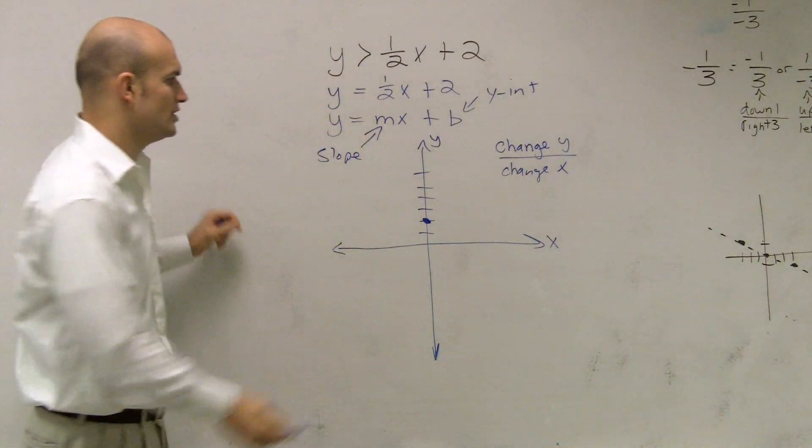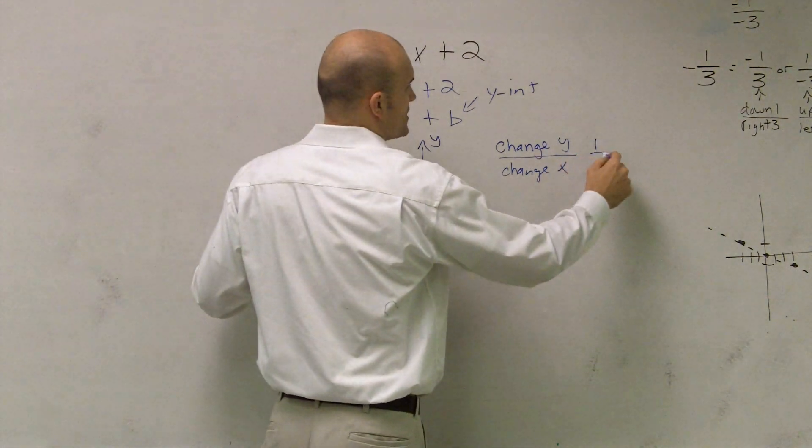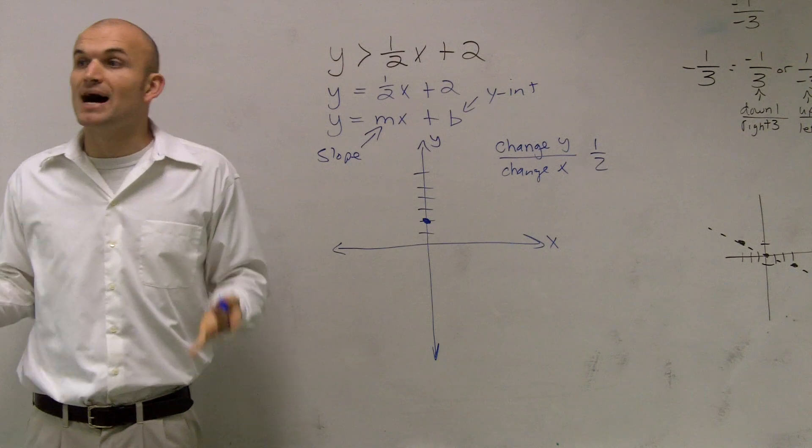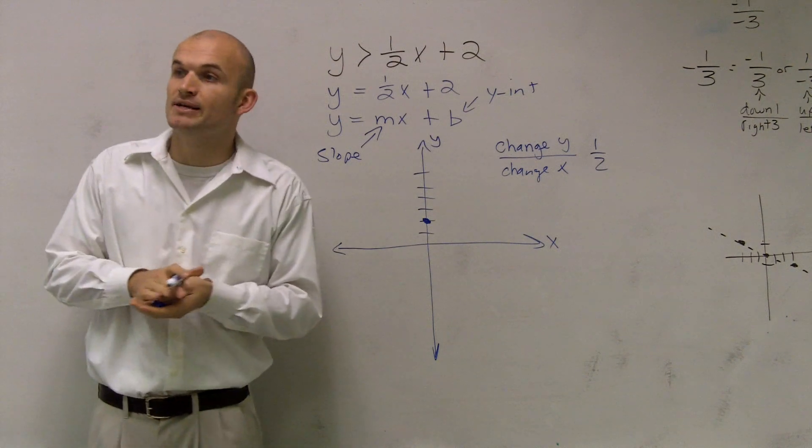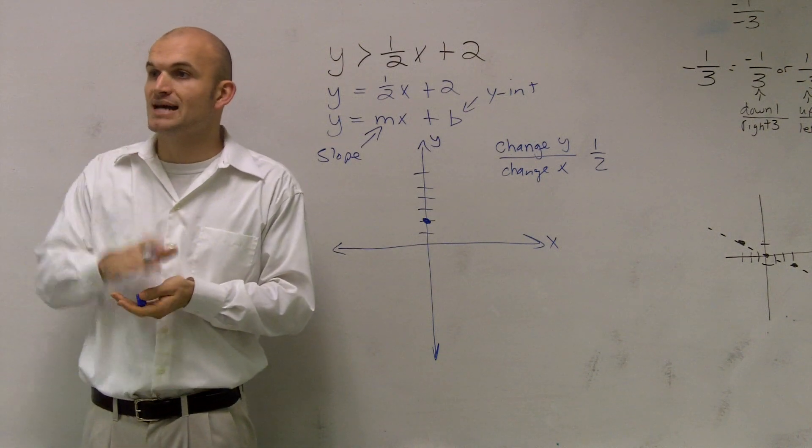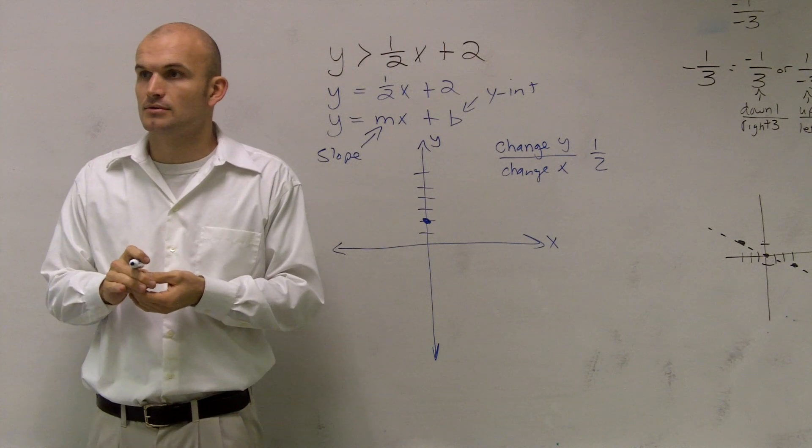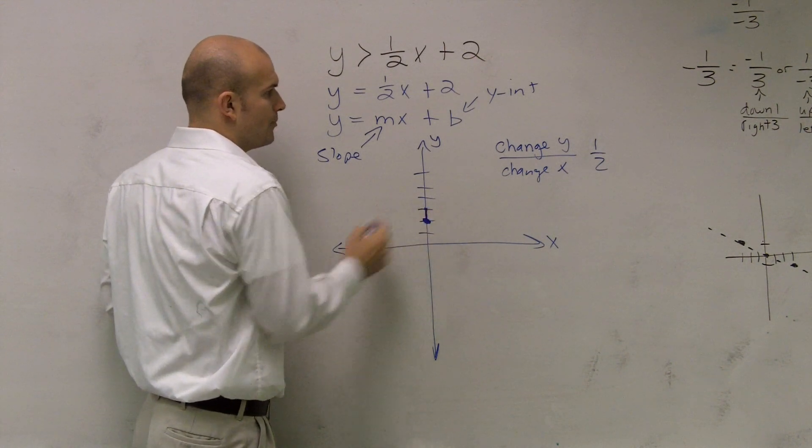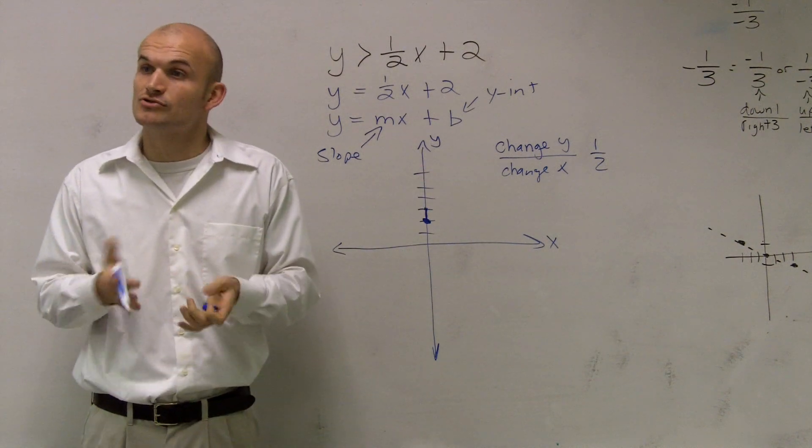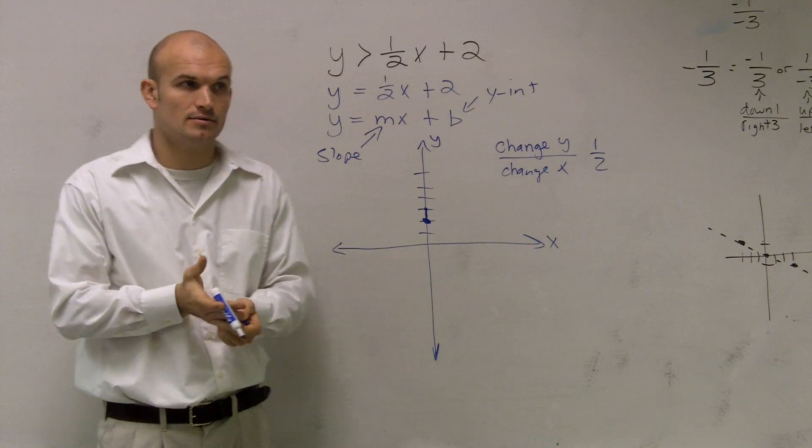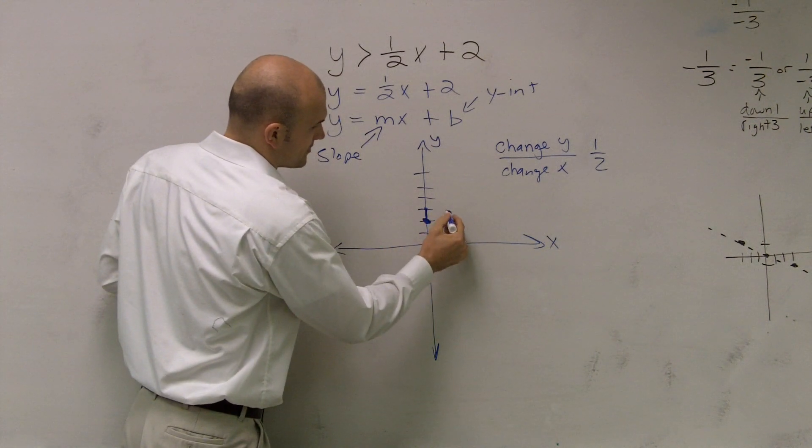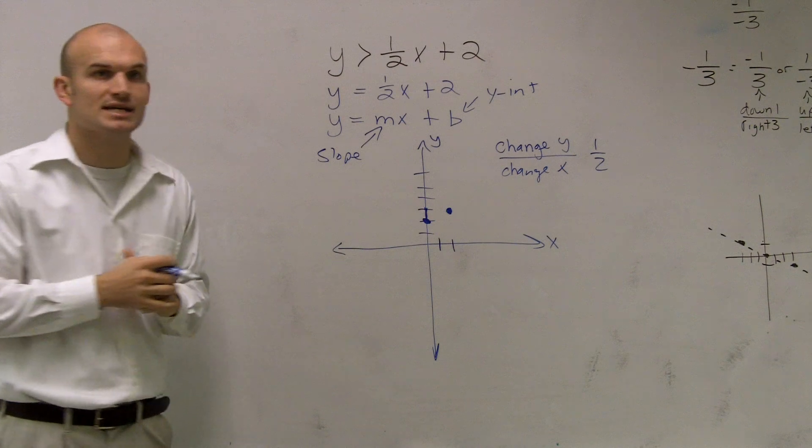So if my change, so if we look at this, if I have my slope as 1 over 2, so that means the change in my y-coordinates is a positive 1. So does that mean I'm going to be traveling up or down to get to my next point? And you could say up 1. So I'm going to go up 1. Then the change in my x is going to be a positive 2. So am I going to go to the left or to the right? To the right. So you can go over 2 units to the right. And there we go. I found my next point, all right?